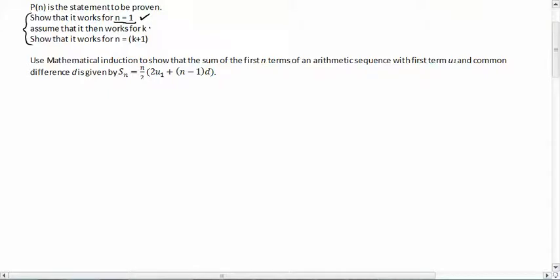But once we assume that it works for k, we now are going to show that it works for the next one. And if we show that it works for the next one, then that becomes k and we've already showed that it works for the next one. So once we show that it works for k plus one, we've now shown that it works for all of the dominoes in the series.